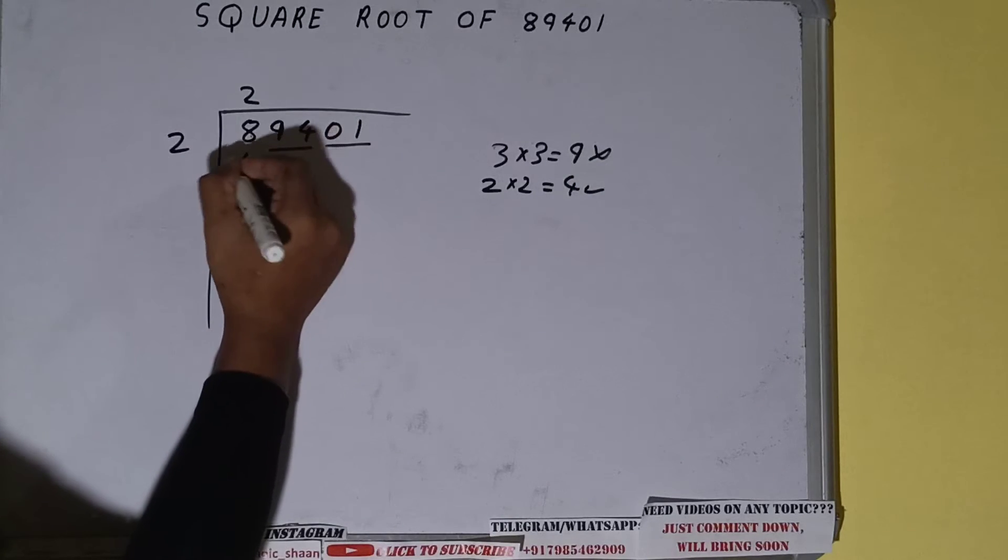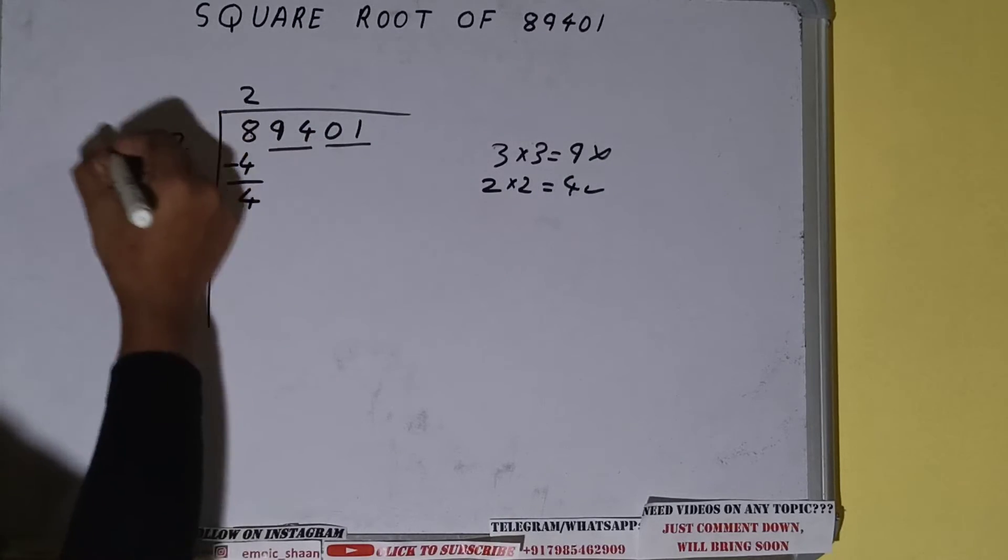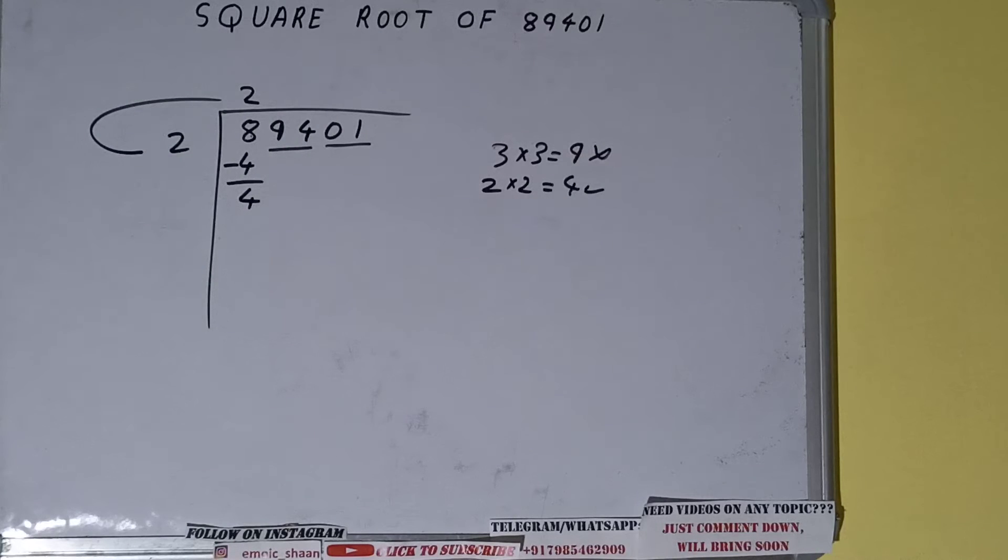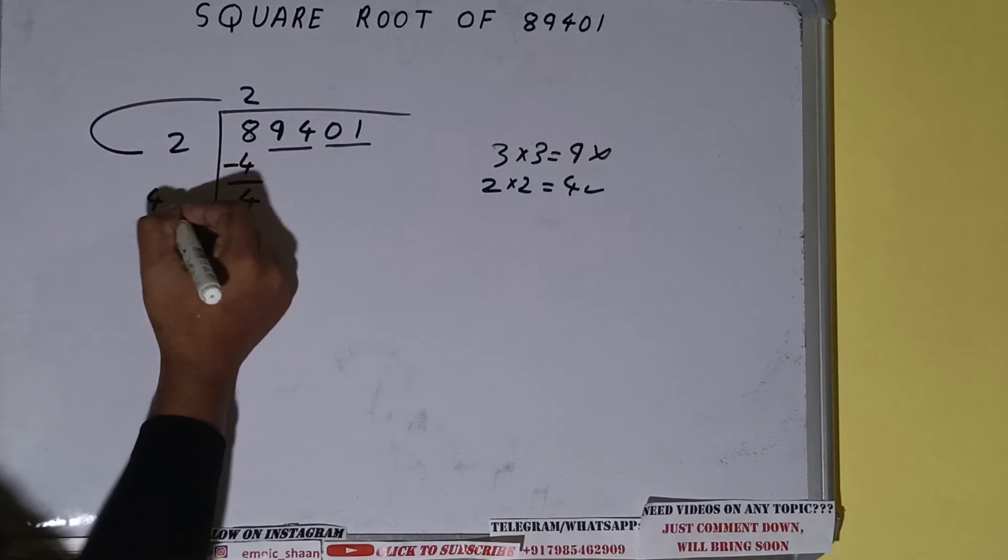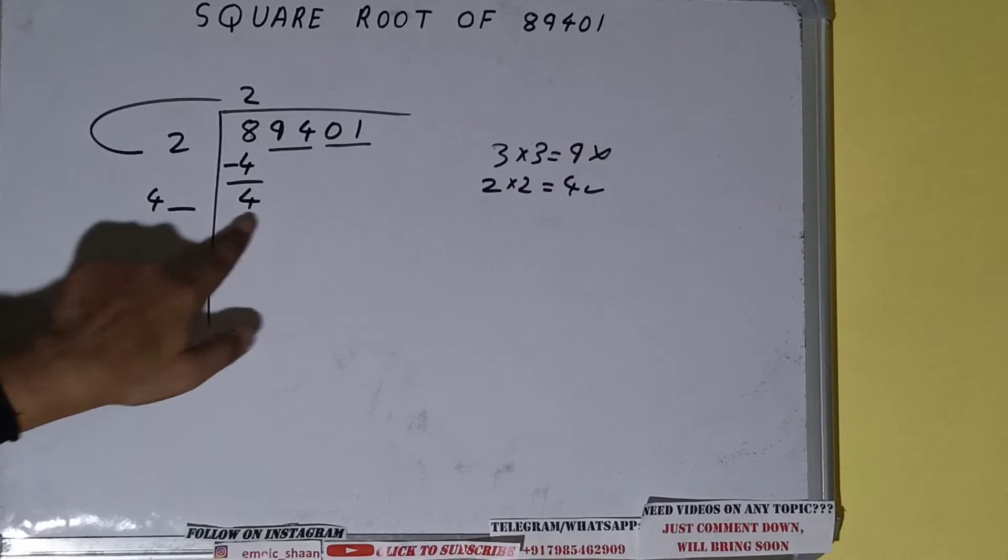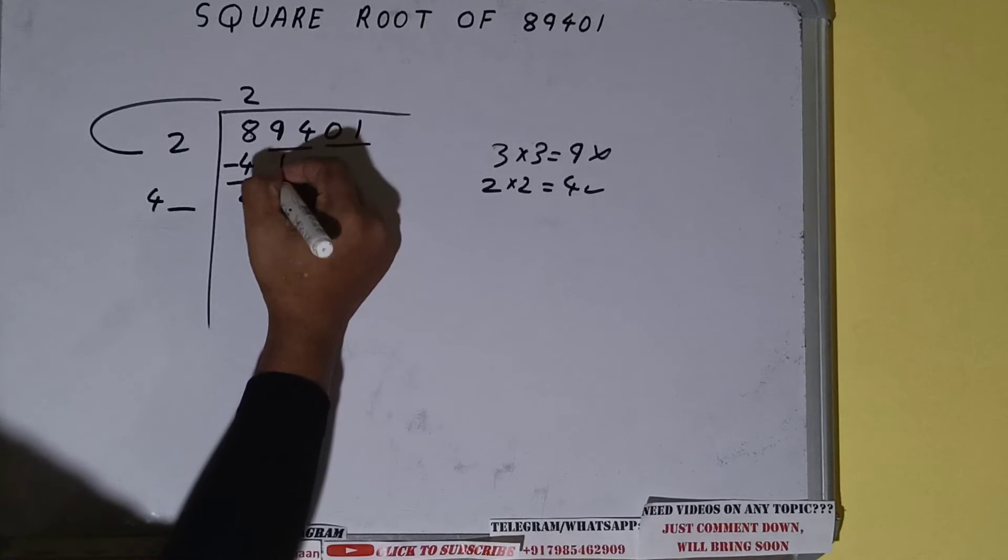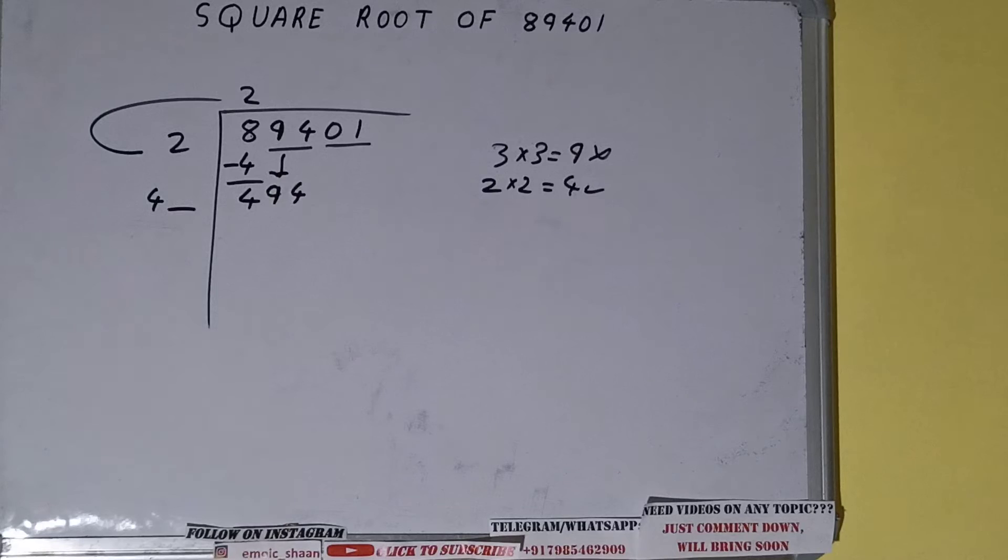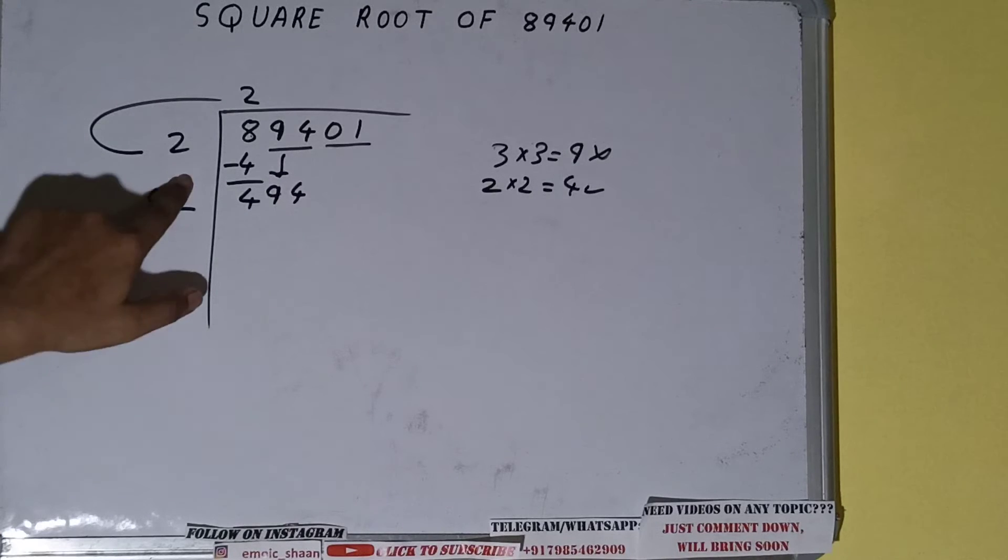4 subtract, and 4 will be left. Now we did 2 into 2, so add both. So 2 plus 2 will be 4. Write it here and keep a digit extra, and this number we need to make it big. So bring the next pair down and it will become 494.